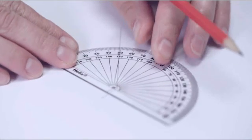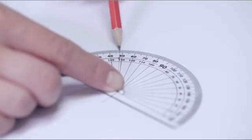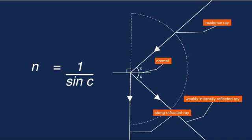A protractor is used to determine the critical angle. The critical angle and refractive index are linked by an equation n equals 1 over sine c. The greater the refractive index of a material, the smaller the critical angle.